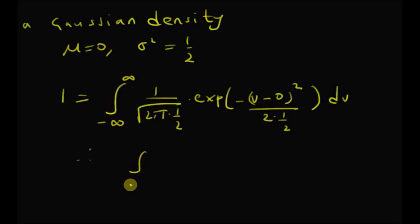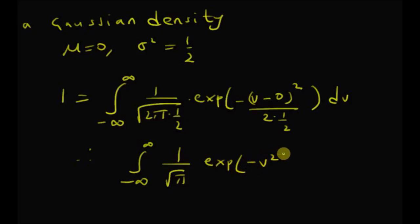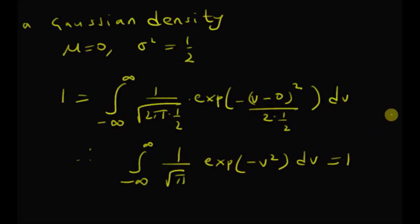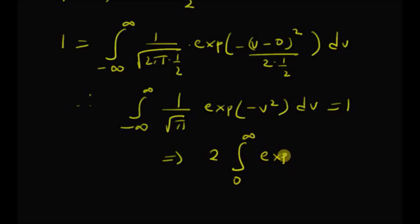This becomes the integral from -∞ to +∞ of 1/√π · e^(-v²) dv = 1, since the two times 1/2 equals 1 in the denominator of the exponent. Since this integrand is an even function, we can rewrite the integral as 2 times the integral from 0 to infinity of e^(-v²) dv = √π.